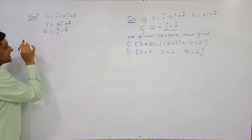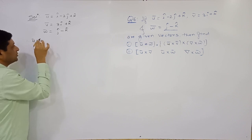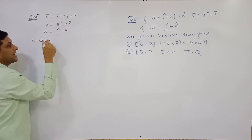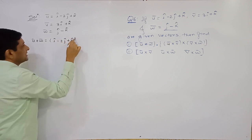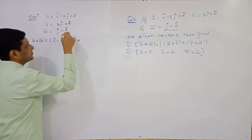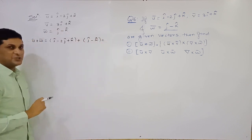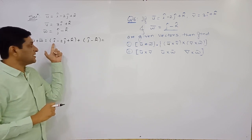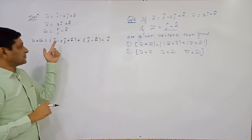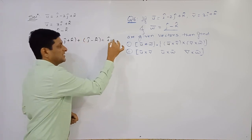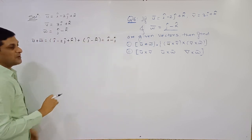The first required value is u̅ + w̅. Substituting, u̅ = i cap − 2j cap + k cap and w̅ = j cap − k cap. Collecting terms: there is one i cap term, so write i cap. Then −2j cap + j cap = −j cap. And +k cap − k cap cancel out. So u̅ + w̅ = i cap − j cap.